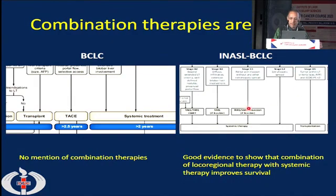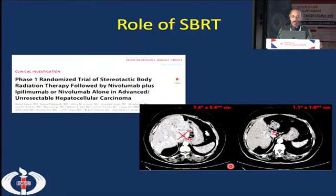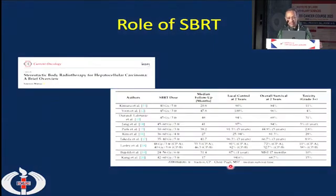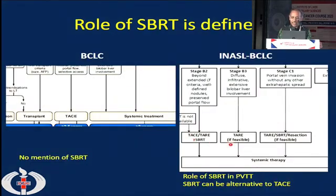In the INASL BCLC staging, for stage B or C, after giving locoregional therapy, we can offer systemic therapy for better response and better overall survival. Regarding SBRT — many studies now show that SBRT achieves good local control and overall survival in the range of 84 to 90%. We have incorporated SBRT as an option for patients who have stage C1 — portal vein tumor invasion — or even as adjuvant therapy alongside TACE and TARE for small tumor burden.